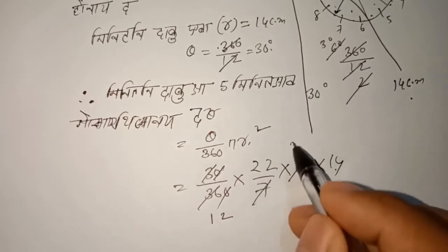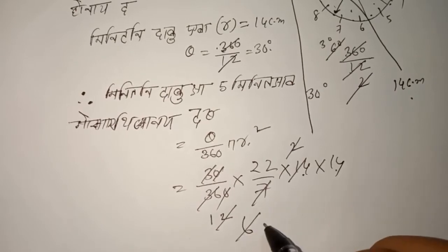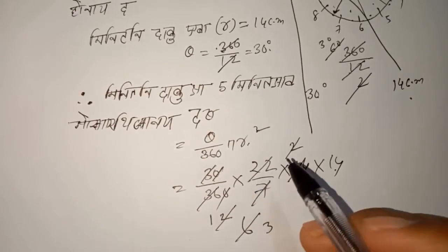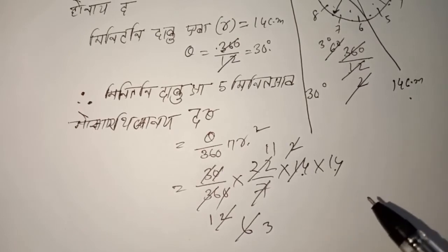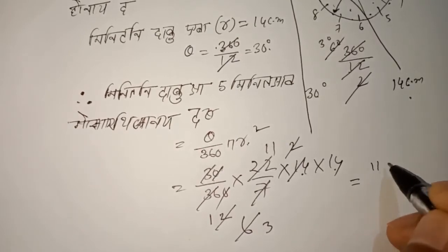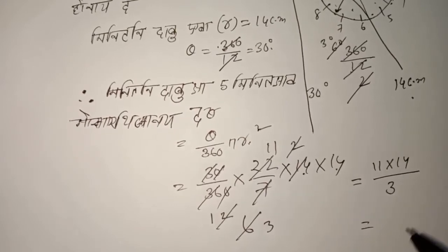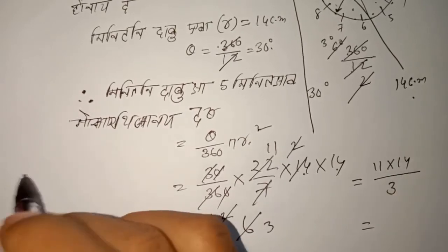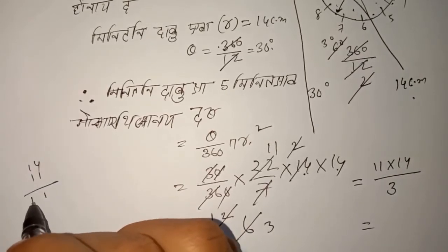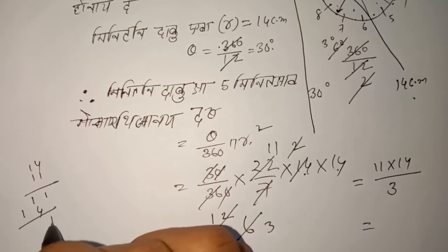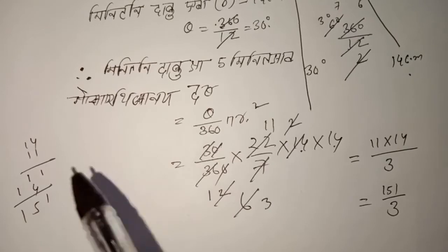Continuing the cancellation: 2 into 6 gives 3, 7 cancels with 14 to give 2. So we have 11 into 14 by 3, equal to 11 into 14, which is 154, divided by 3. So the answer is 154 by 3 — approximately 51.3 cm².